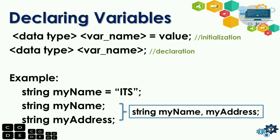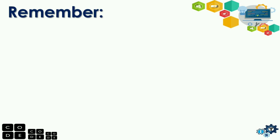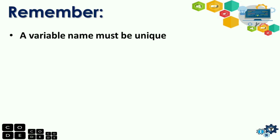Next, the proper way to create a variable name. These are the things you need to remember. A variable name must be unique — meaning it should have no duplicate, just like a student ID or employee ID where no two are the same. Example: 'int num1, num2, num3;' — we have three variables, and if you look at them, they all have different variable names.